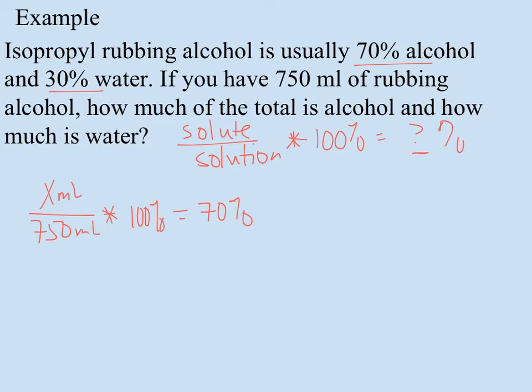So to solve for this I'm going to have to multiply both sides by, I have to multiply by 750 but divide by 100 to get x all alone, which means I do the same thing on this side, 750 over 100. And I come up with x milliliters of solute has to be equal to 70 times 7.5 is equal to 525 milliliters.